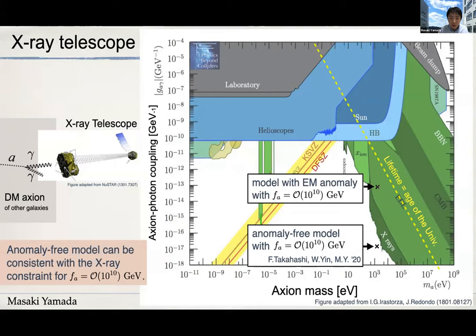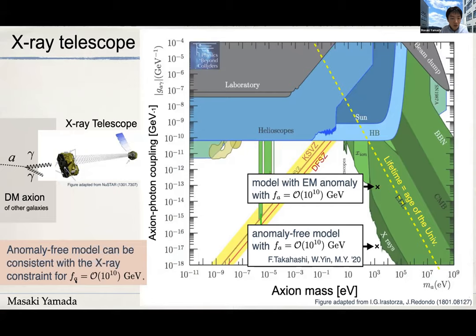One can think about a model without electromagnetic anomaly. If we consider the anomaly-free ALP model, the axion-photon coupling comes only from a threshold correction of the electron, and the resulting axion-photon coupling can be as small as 10^{-17} GeV^{-1}, which is consistent with the X-ray bound. Let me emphasize that this is not fine tuning — the electromagnetic anomaly is determined by the Peccei-Quinn charges of the standard model fermions, which are integers, and the integer may be zero. So this is model-dependent, not fine-tuned. In summary, the anomaly-free ALP model can be consistent with the X-ray constraint even when the decay constant is 10^{10} GeV.